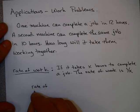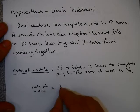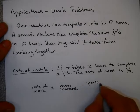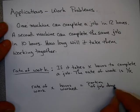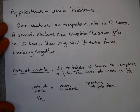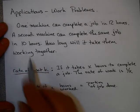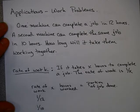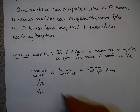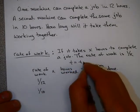So I'm going to make a little table here. I'm going to have rate of work times hours worked equals portion of job completed. Our first machine has a rate of work of 1/12. It completes a job in 12 hours, so its rate of work is 1/12. Our second machine completed a job in 10 hours, so its rate of work is 1/10, meaning it does 1/10 of the job in one hour.